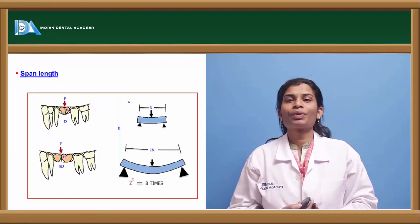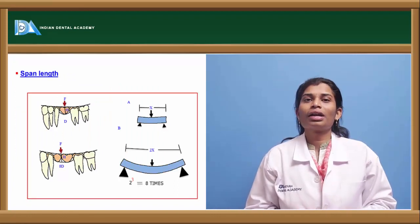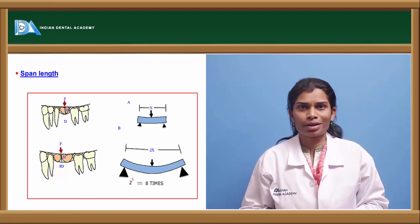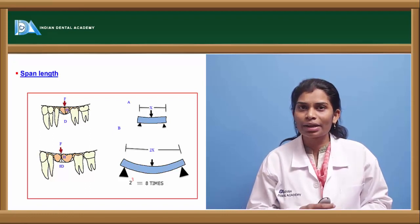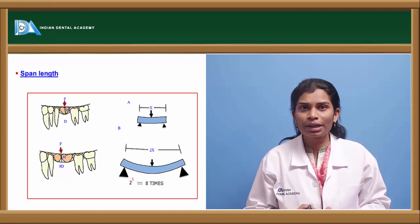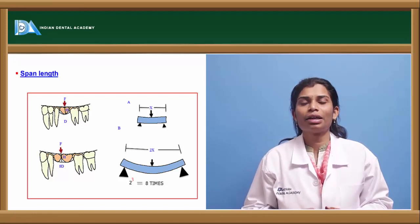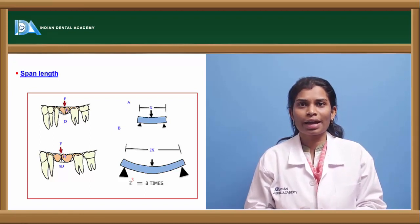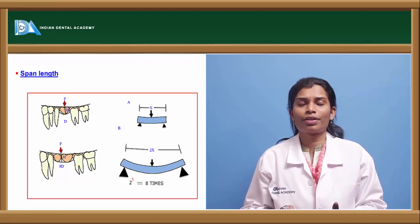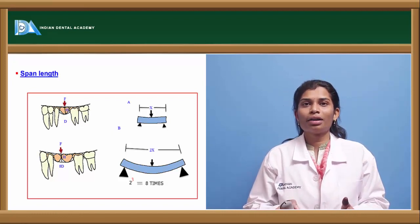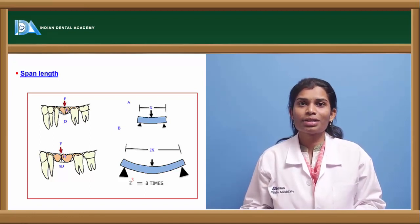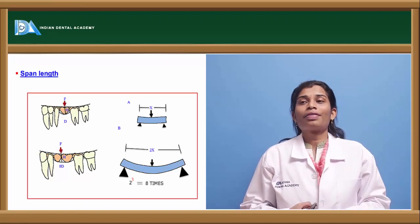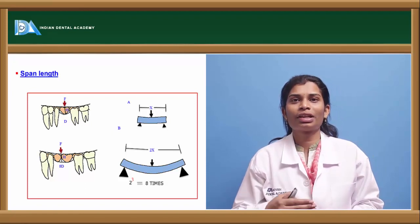Regarding span length — the number of teeth missing — a single missing tooth gives a very short span, whereas two or three missing teeth increases the edentulous span. The flexibility or deflection of the FPD is directly proportional to the cube of the span length. If span length is x, deflection is proportional to x³. In a two-unit case, span length is 2x, making deflection proportional to (2x)³, which is eight times more than the single tooth missing case. Flexibility is also inversely proportional to the cube of the occluso-gingival thickness of the pontic.